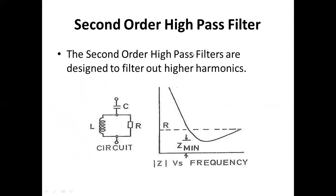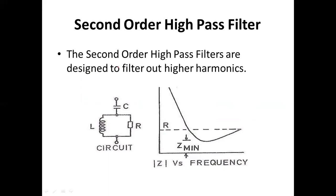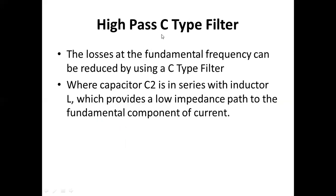The second order high pass filter is designed to filter out higher harmonics, removing them from the system. The circuit diagram consists of one capacitor, inductor, and resistor. We can see that impedance is minimum at a certain frequency, and before and after that the impedance is high as the frequency changes. Higher harmonics are filtered out using this type of filter circuit.